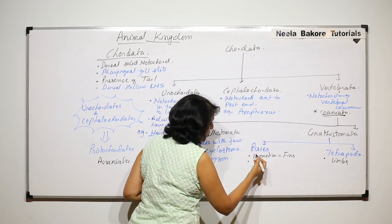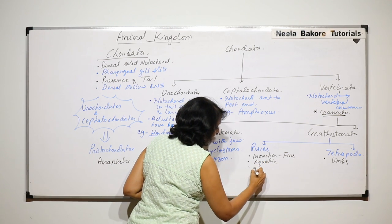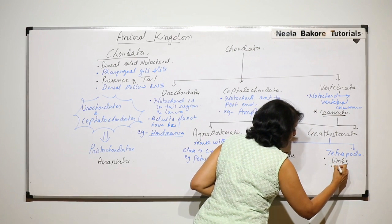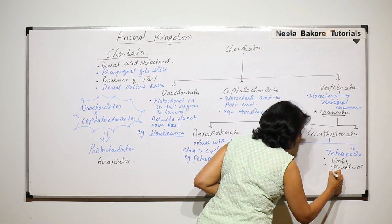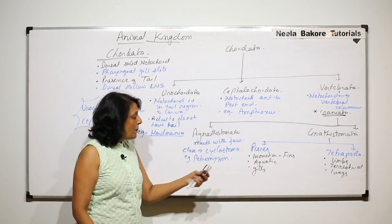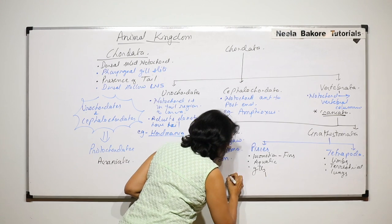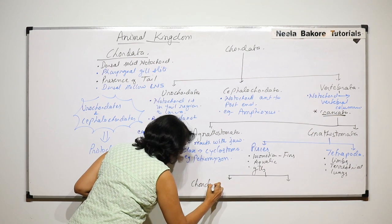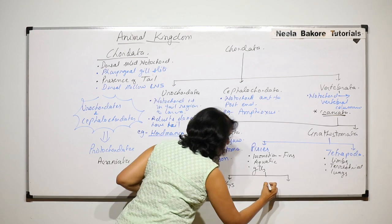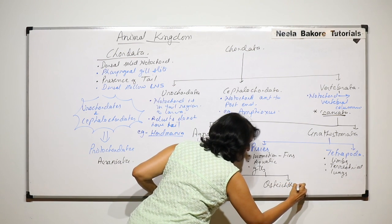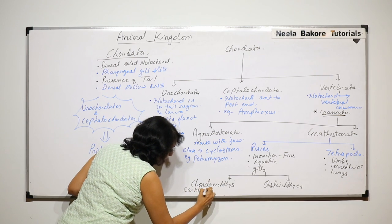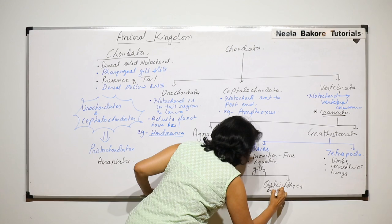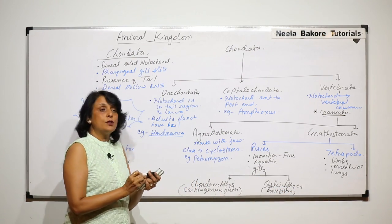Pisces includes organisms or animals which are normally aquatic and they have gills for respiration. Whereas Tetrapoda are normally terrestrial and they have lungs for respiration. Pisces is again divided into two classes: Chondrichthyes and Osteichthyes. Chondrichthyes includes cartilaginous fishes and Osteichthyes includes bony fishes.